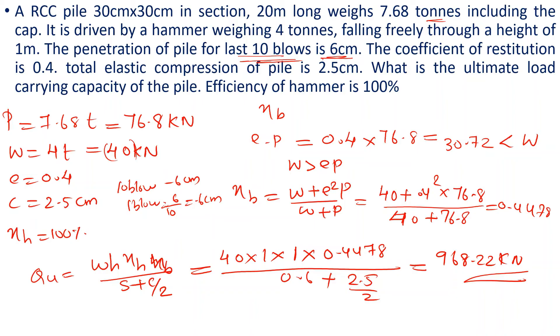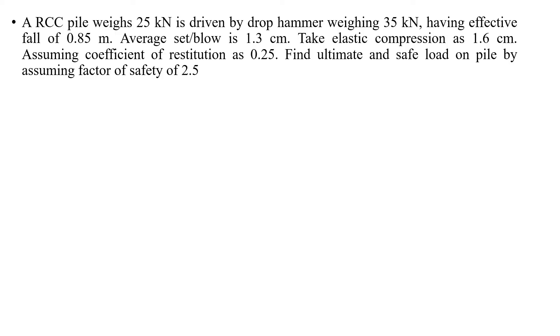In the second problem, a pile weighing 25 kN is driven by a drop hammer weighing 35 kN, having effective fall of 0.85 meters. Average set per blow is 1.3 centimeters. Elastic compression is 1.6 centimeters. Coefficient of restitution e is 0.25. Find ultimate and safe load on pile assuming factor of safety of 2.5.